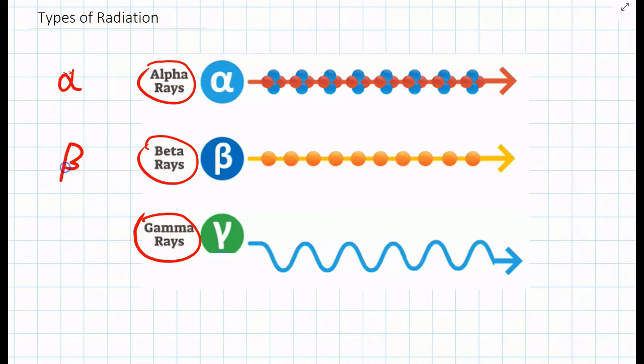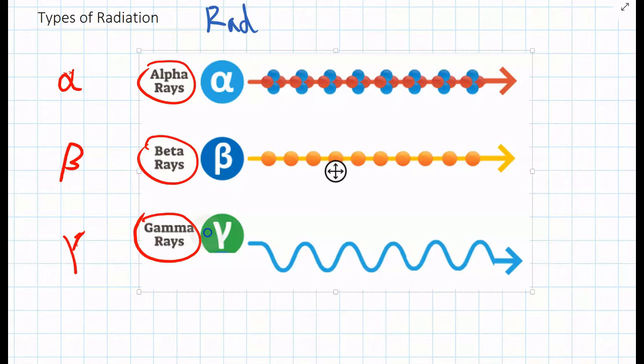We have alpha, beta, and gamma. And remember we also learned that radiation can either be a stream of waves of light energy or it can be a stream of particles. And two of these types are particles and one of them is waves.